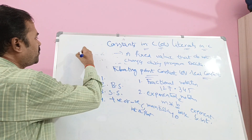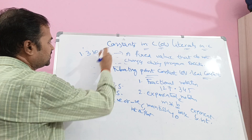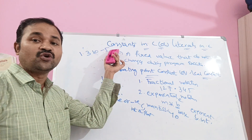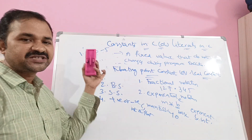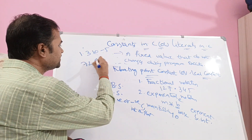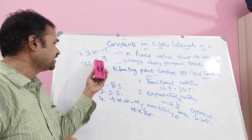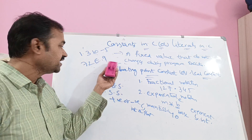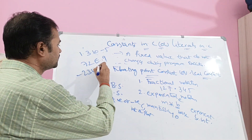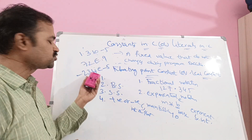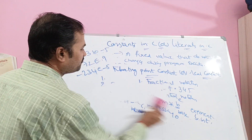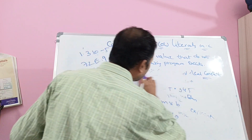For example: 1.3 × 10^(−5) — here 1.3 is the mantissa, 10 is the base, and minus 5 is the exponent. However, the exponent value must be an integer, not a floating point. Next example: 72 E 9 — here 72 is the mantissa, E means base 10, and 9 is the exponent. Next: minus 234 E minus 5. That concludes numeric constants. Now we will discuss character constants.